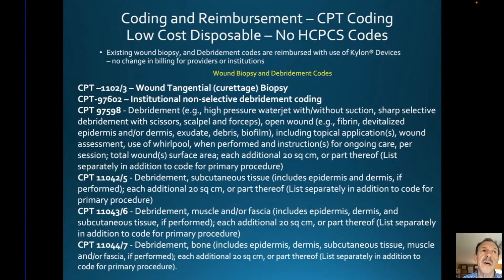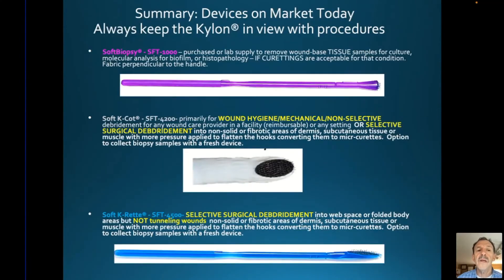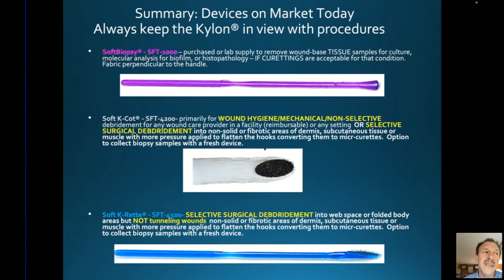In summary, we've got the biopsy device on top, the finger cot in the middle, and the K-ret on the bottom. These are for selective surgical debridement on the bottom, biopsy only on the top, and in the middle the Soft K-Cot. You can actually take a second Soft K-Cot and biopsy a very large area, then drop that fabric tip — snip it off with scissors or drop the whole cot into culture medium and send it in. Always use a fresh one.